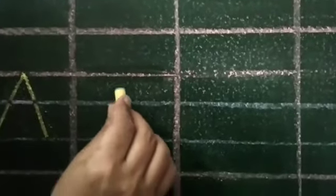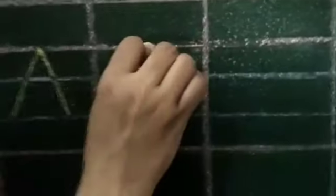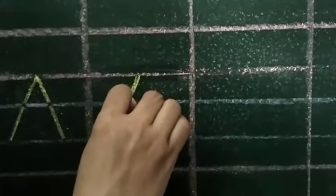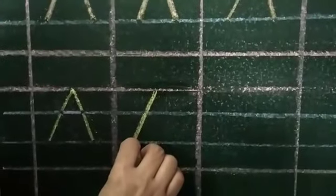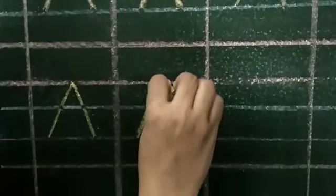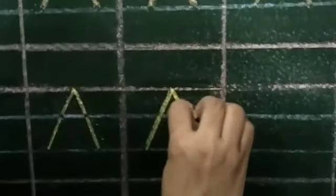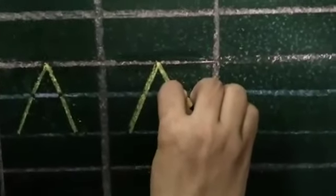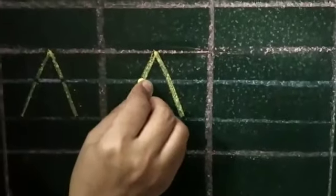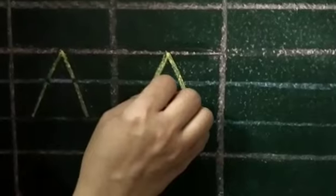Now let's see once again. Look here. Start from the red line. Draw a slanting line till the first blue line, then to the second blue line like this. Then from this point again, draw a slanting line in the opposite direction till the first blue line, then to the second blue line like this. On the first blue line, draw a sleeping line in between. This is A.